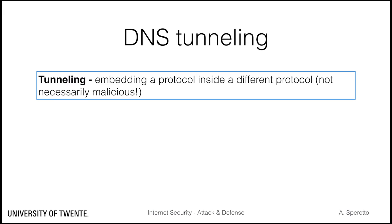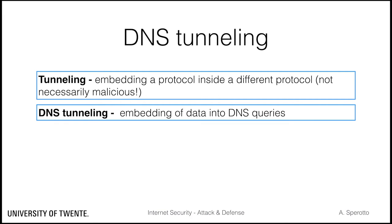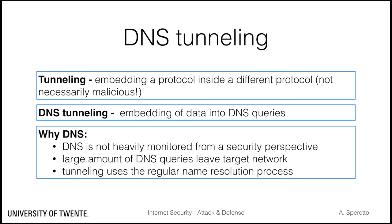Let's have a look at one example of covert channel: DNS tunneling. Tunneling is the operation of embedding a protocol inside a different protocol — for example, tunneling IPv6 traffic over IPv4 by encapsulating IPv6 packets into IPv4 packets. Tunneling is a transmission mechanism and not per se malicious. In the case of DNS, data can be embedded into DNS queries. DNS is a good candidate for data exfiltration because it is in most cases not heavily monitored from a security perspective. A large number of DNS queries leave the target network daily for name resolution, so it would be easy to sneak in some additional packets. DNS tunneling makes use of the regular name resolution process, in practice behaving like regular DNS traffic.